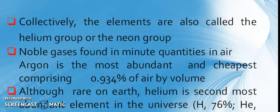The noble gases are found in minute quantities in air. For example, Argon is the most abundant and cheapest comprising 0.934% of air by volume. You also know although rare on Earth, Helium is the second most abundant element in the universe.